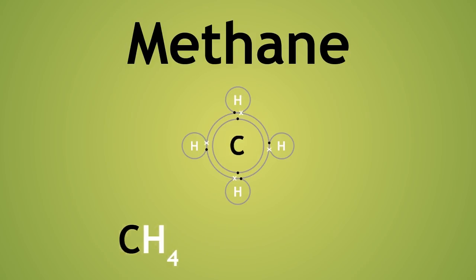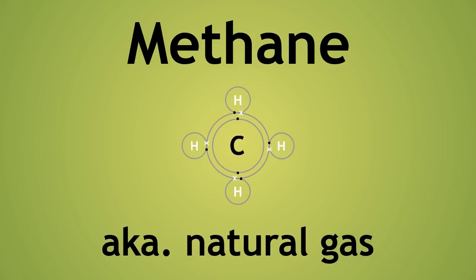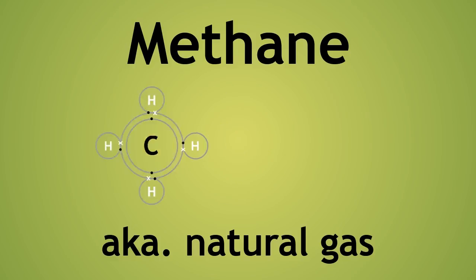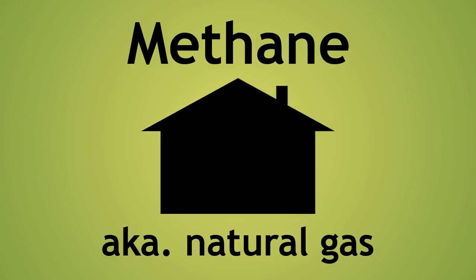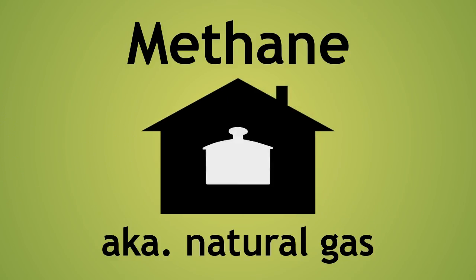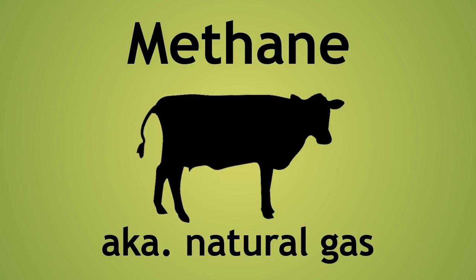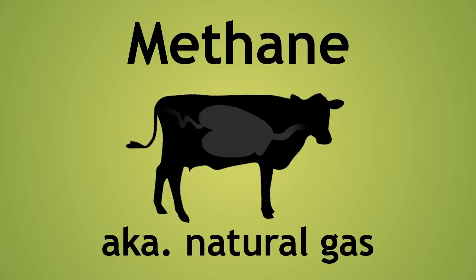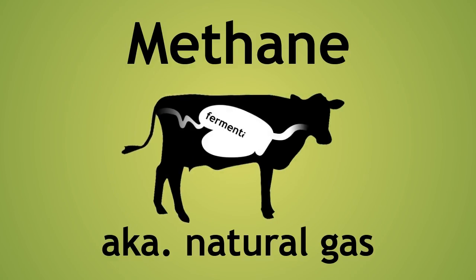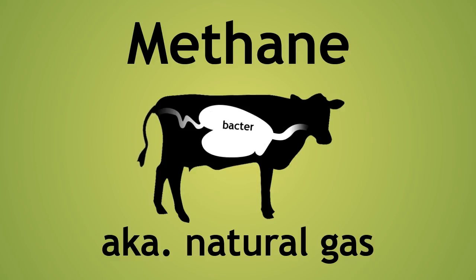Methane is known as natural gas and is often used as a fuel in homes for heating and cooking. It is also the gas released by cows by belching and flatulence, as it is produced by the fermentation of food by bacteria in their stomachs.